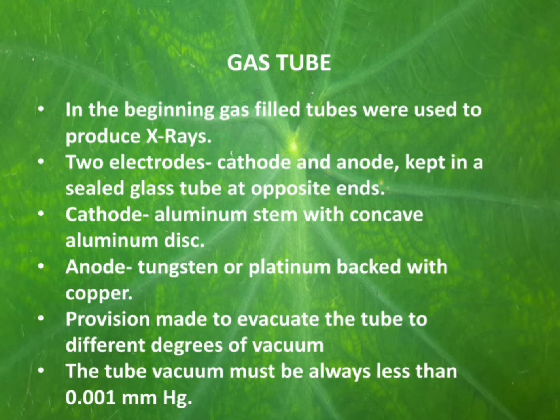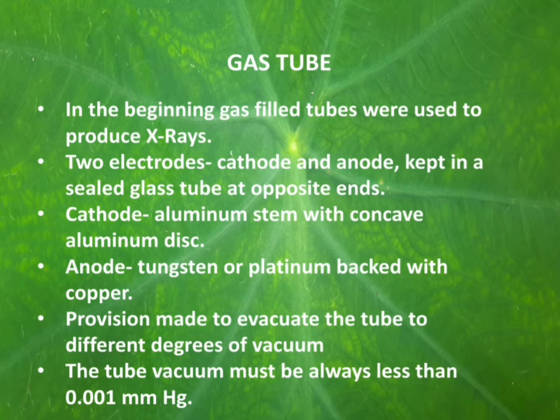In the gas tube, the cathode is made up of an aluminium stem with a concave aluminium disc. The anode is made up of tungsten or platinum backed with copper. A provision is made to evacuate the tube to different degrees of vacuum, adjusting the presence of gas inside. The tube vacuum must always be less than 0.001 mm of mercury.